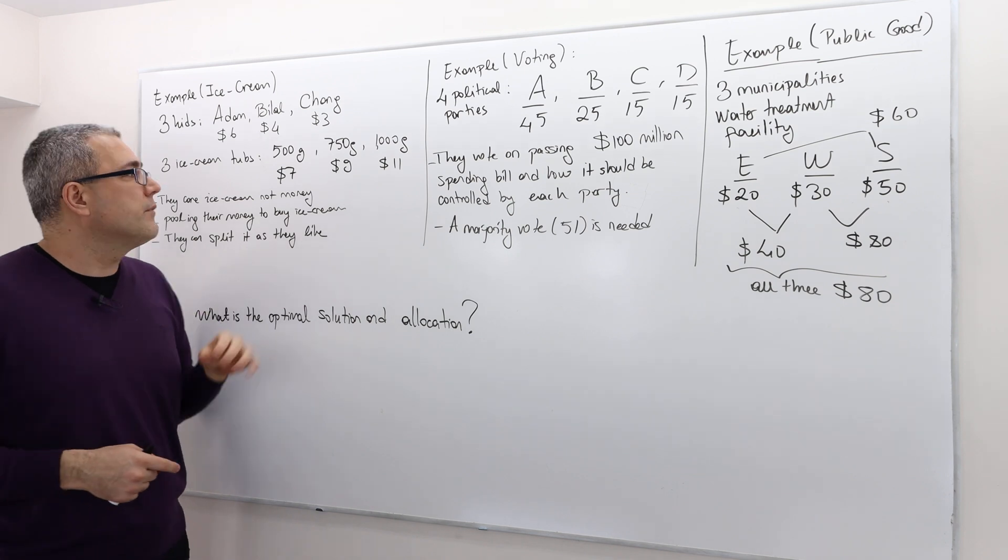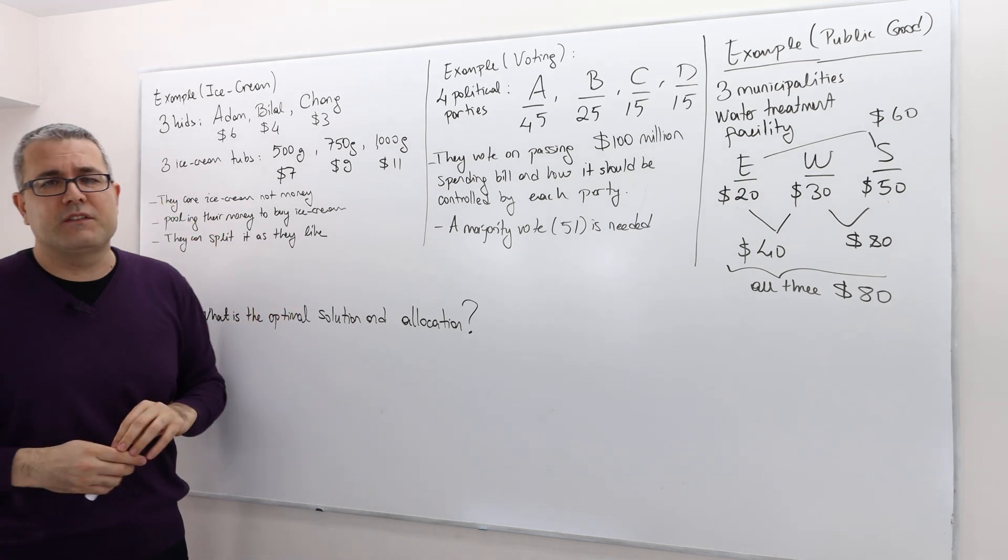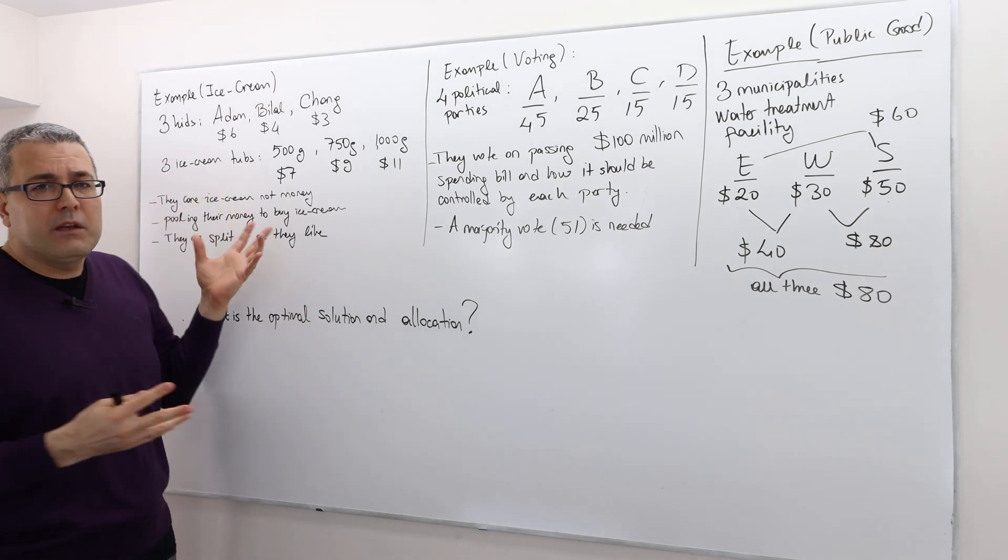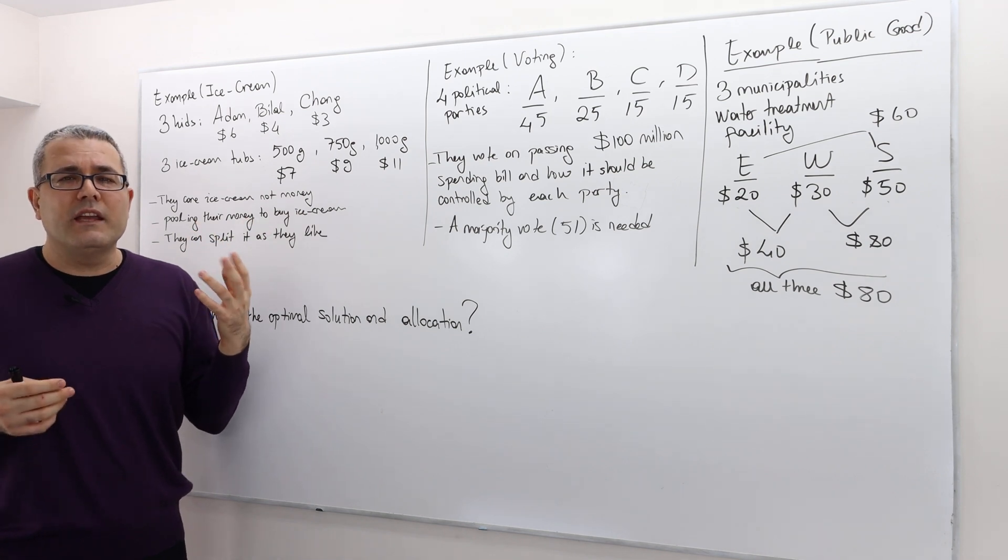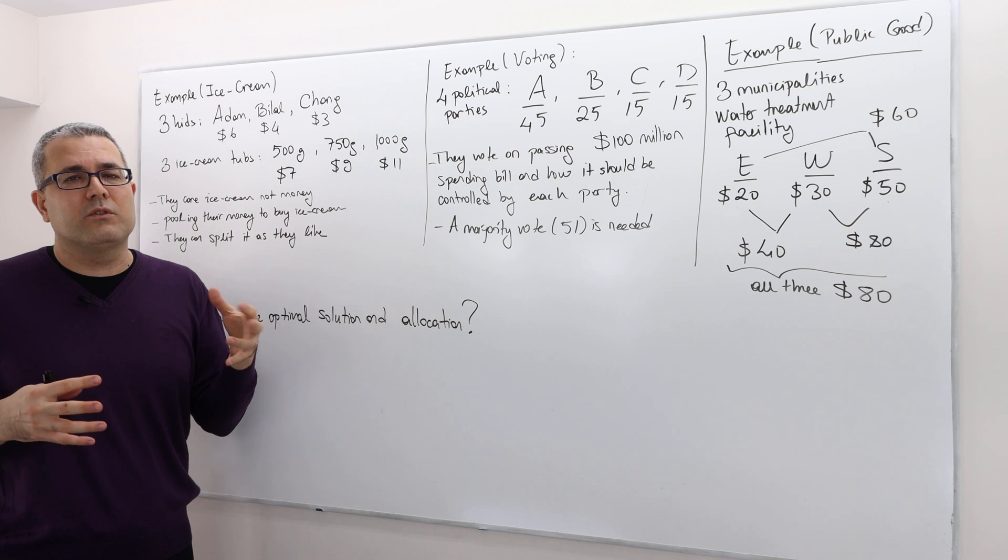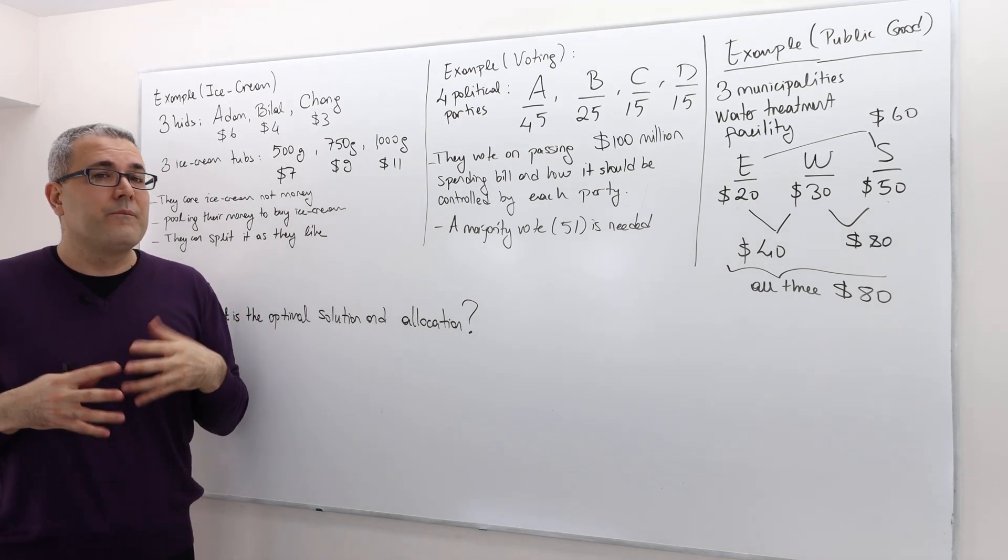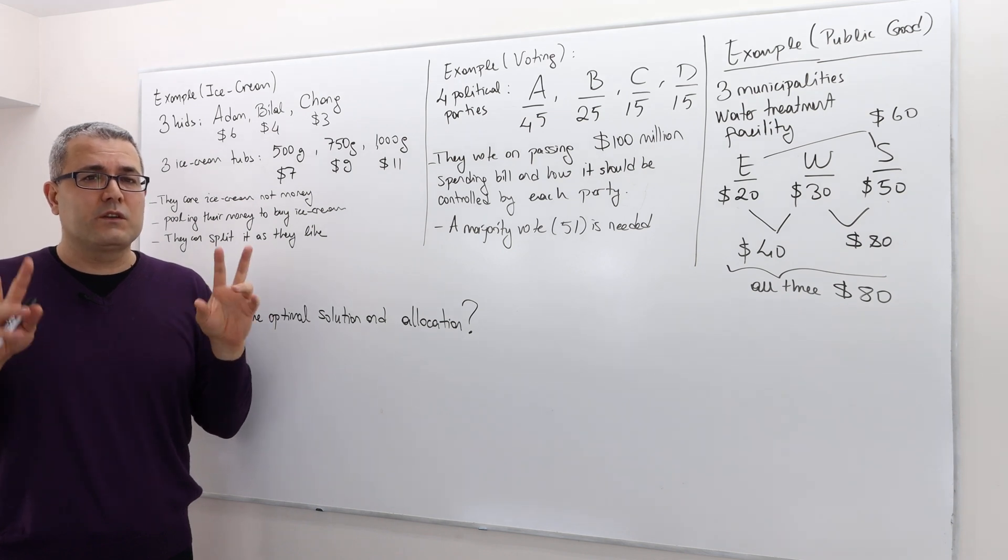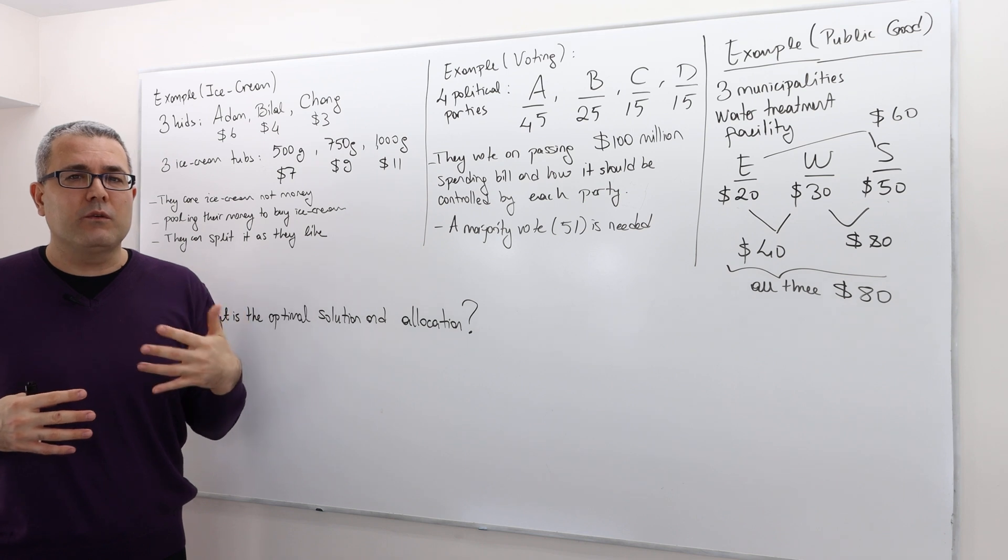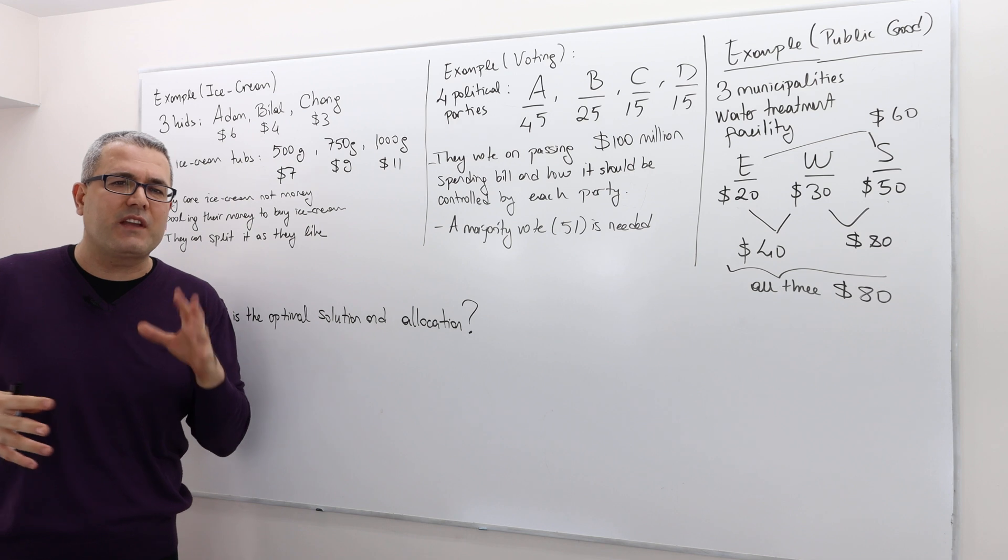Well, yes. I'm going to focus only on one example, the ice cream example. This is a strategic environment, right? There are three players - Adam, Bilal, and Chang - and they have some money, but the thing is no one individual can actually afford to buy an ice cream, and so they get together. Well, the question is how are they going to form these coalitions, and how are they going to split the ice cream once they form a coalition? So these are all decisions.